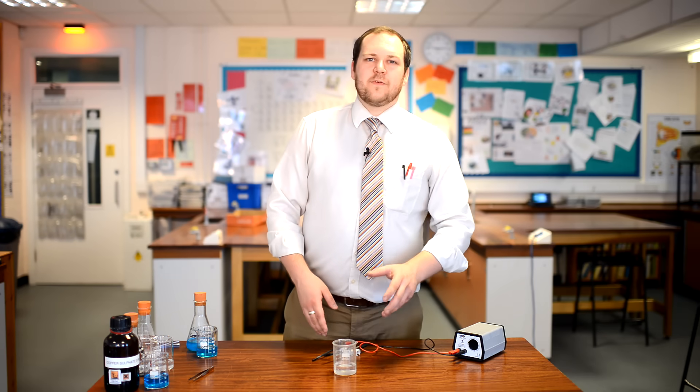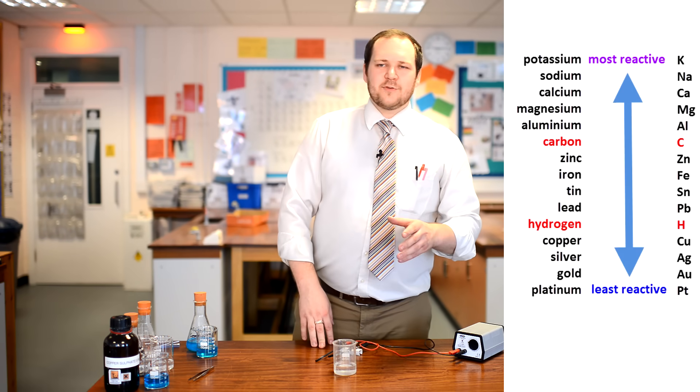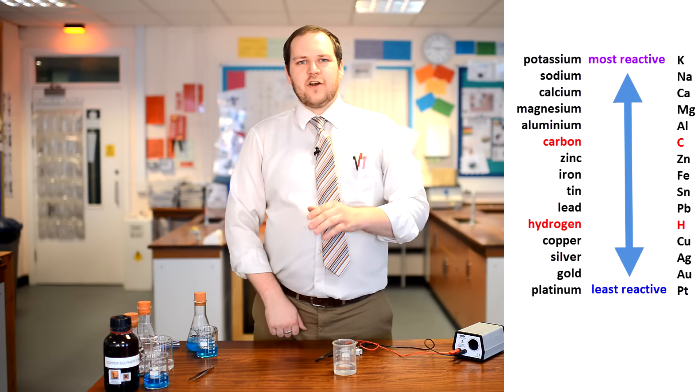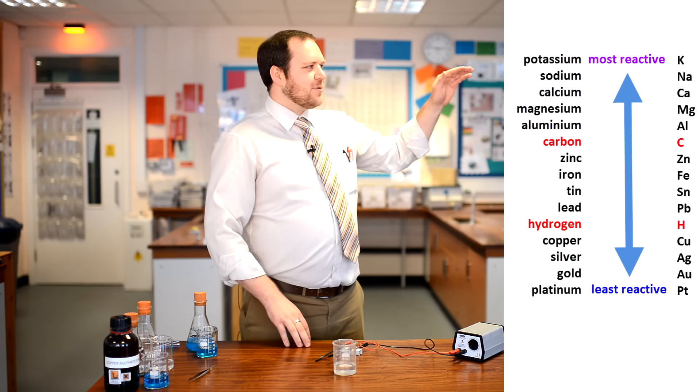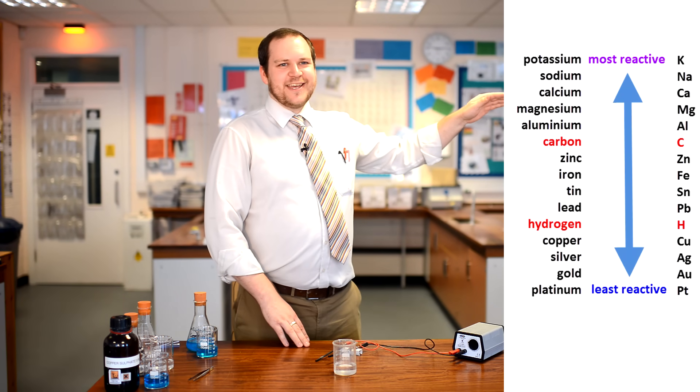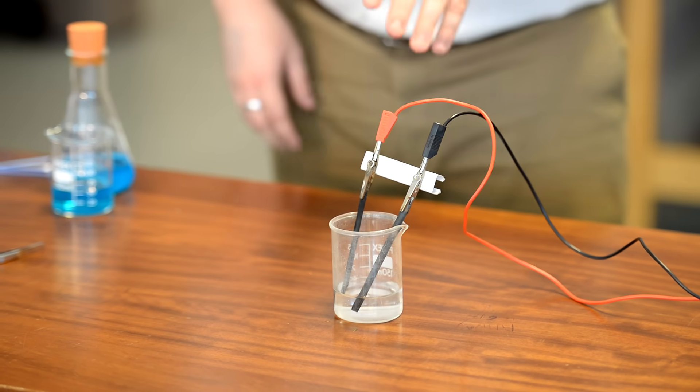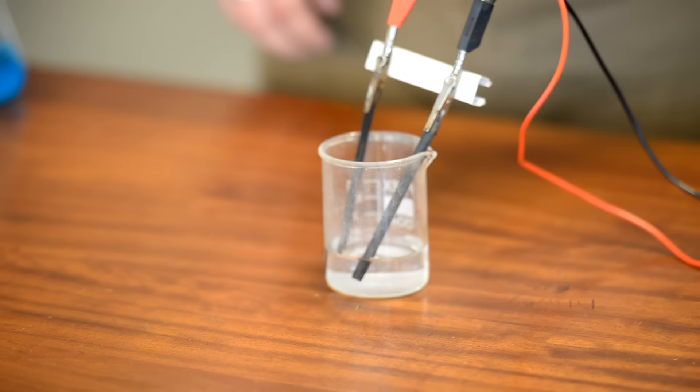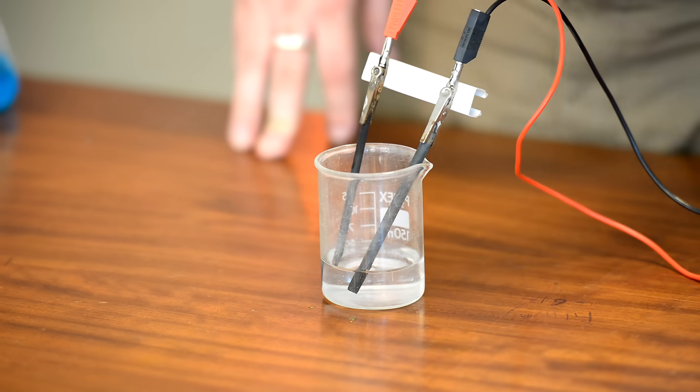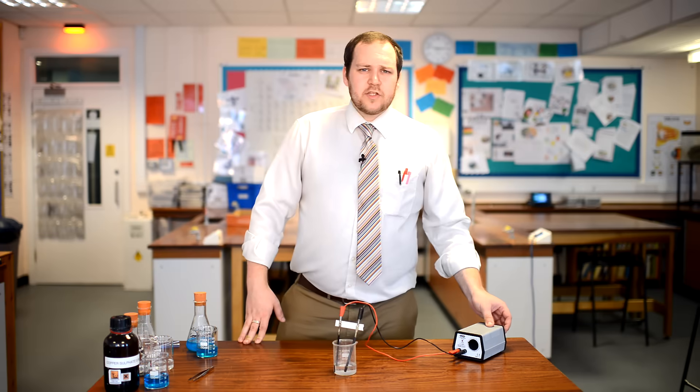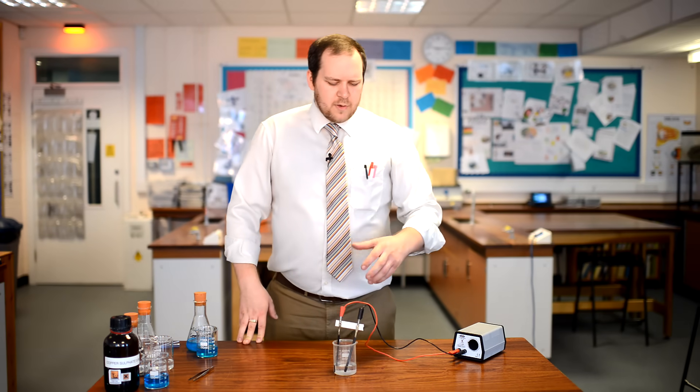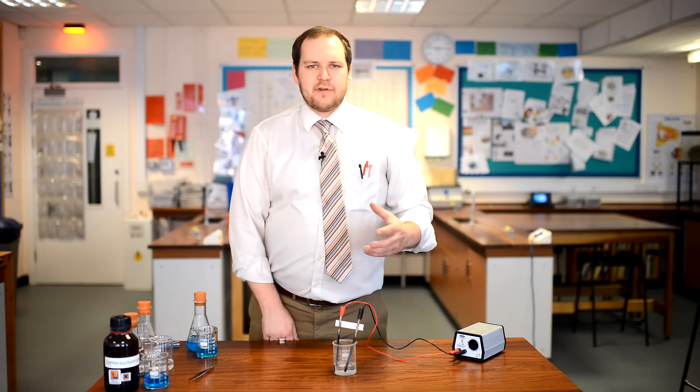We are now going to do a test with sodium sulphate. Sodium sulphate contains a metal that is more reactive than hydrogen. Sodium, you can see, is far higher in the reactivity series than hydrogen is. Once again, making sure that the electrodes aren't touching, I am going to put the electrodes into the sodium sulphate, making sure that the bottom of the electrode is covered again. I am going to turn the circuit on so that the electrons can flow and that should allow us to see a reaction starting.